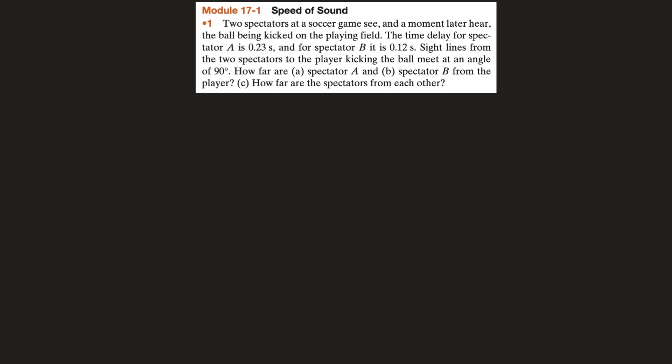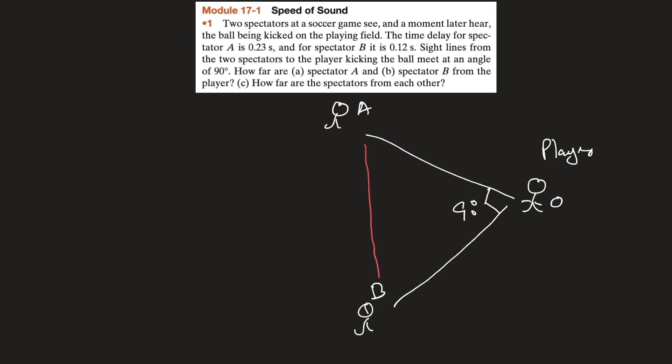Let us suppose that this is the player on the field. Spectator A is at distance d_a from the player, and spectator B is at distance d_b from the player. Both sight lines are at 90 degrees to each other. The distance between spectator A and B is d_ab. So we have to find d_a, d_b, and d_ab.